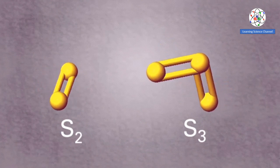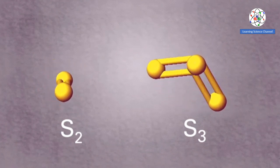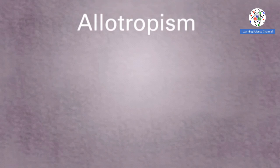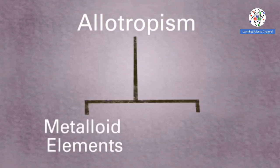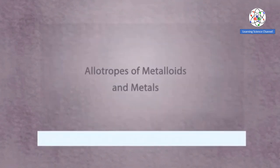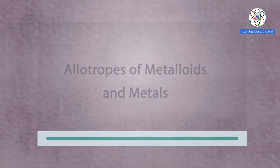So far, we have only discussed allotropes of selected nonmetals. This allotropism also exists in metalloid elements and metals, which you can learn about in the next lesson of our series.